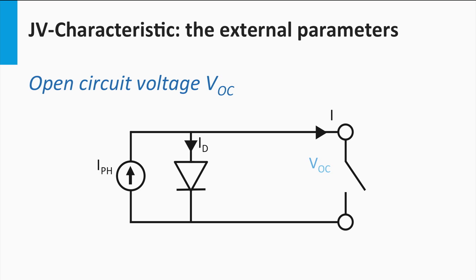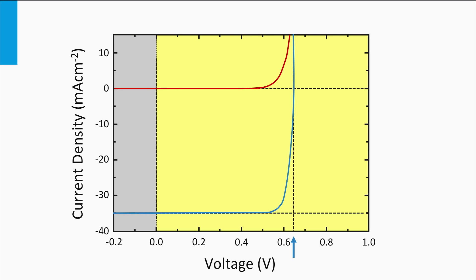Let's consider that the terminals of an illuminated solar cell are not connected. This situation is called an open circuit. In open circuit, the solar cell does not produce any current and solely produces a voltage. This voltage is called the open circuit voltage, and it is recognized in the JV plot by the intersection of the JV curve with the horizontal axis, corresponding to a current density equal to zero.